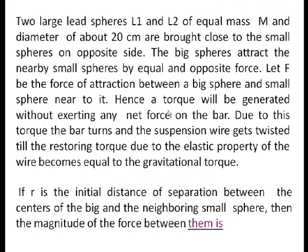The bar turns and the suspension wire gets twisted until the restoring torque due to the elastic property of the wire becomes equal to the gravitational torque. If R is the initial distance of separation between the centers of the big and neighboring small sphere, then by the universal law of gravitation, F = GMm/R². Torque is the physical quantity responsible for rotational motion. A torque is generated without exerting any net force on the bar, so there is no displacement of the bar.